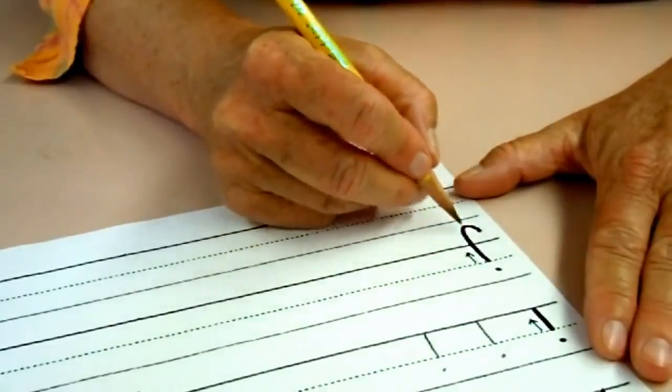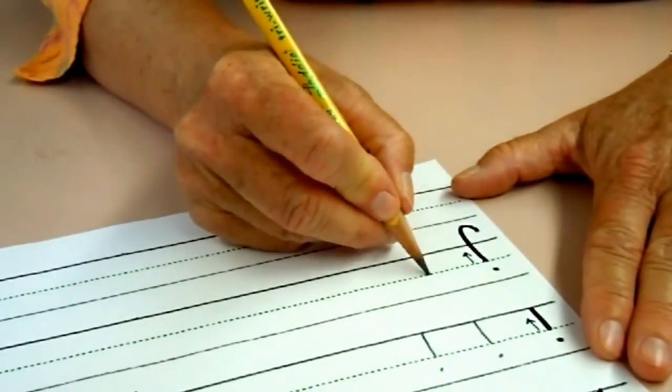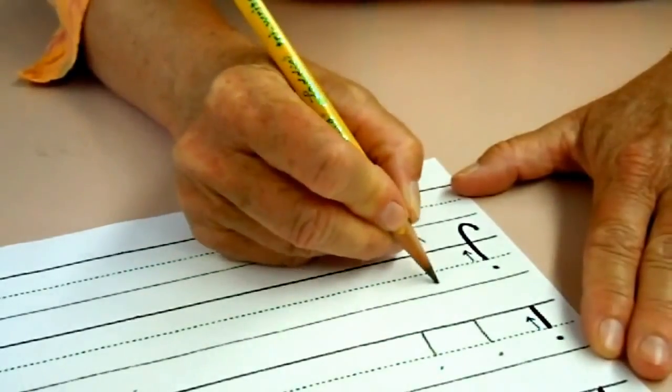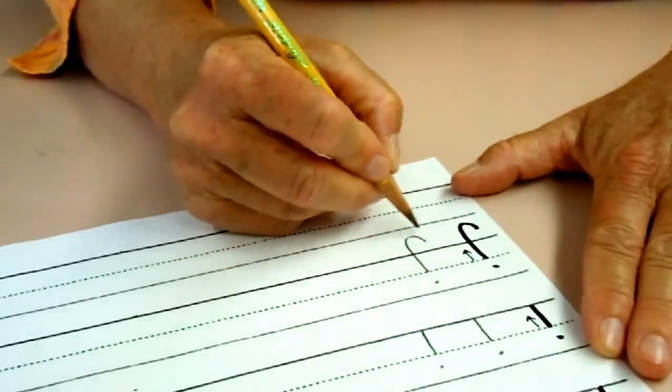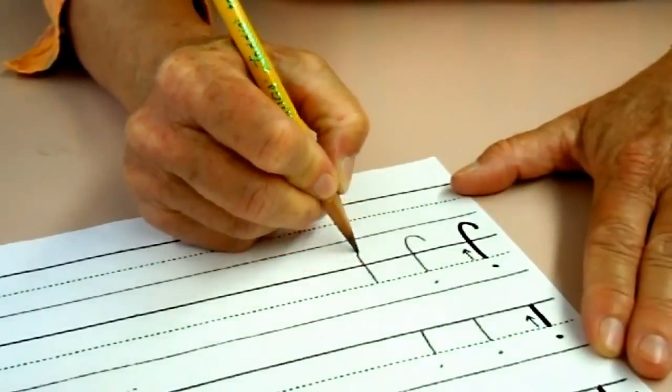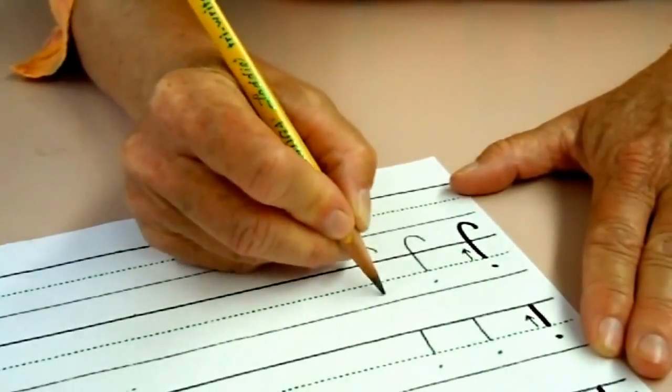The J is tricky because it goes under the ground. Start at the fence. Go down under the ground and curve. Make a dot. Make sure your J is curving the right way, too. Start at the fence. Go down under the ground. Curve. Make a dot.